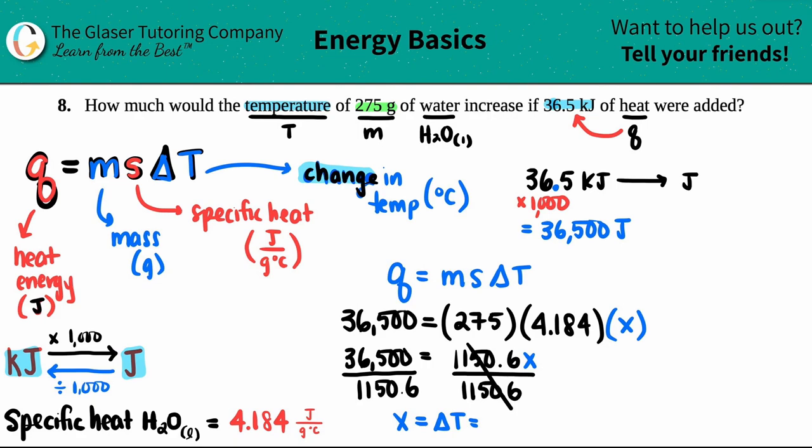And if we play the sig fig game, I should have three sig figs. So I'll say 31.7. And the unit of delta T is the degree Celsius. And that's my final answer. My delta T, my change in temperature would be 31.7 degrees Celsius. So how much would the temperature increase of this amount of water? It would increase by 31.7 degrees Celsius.